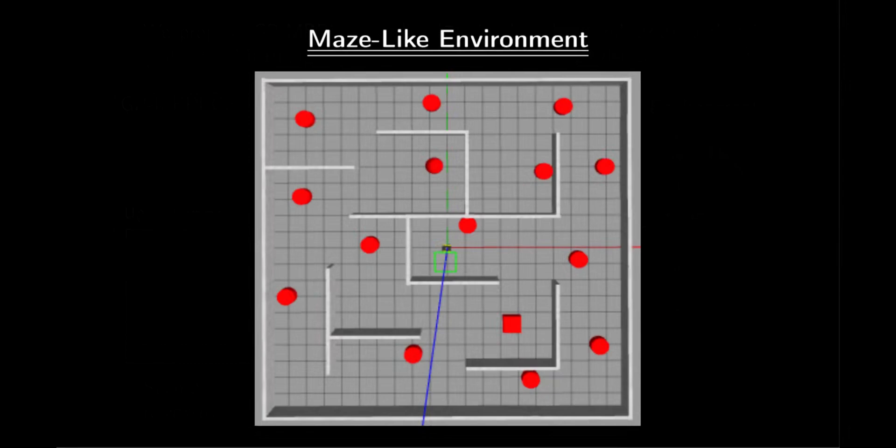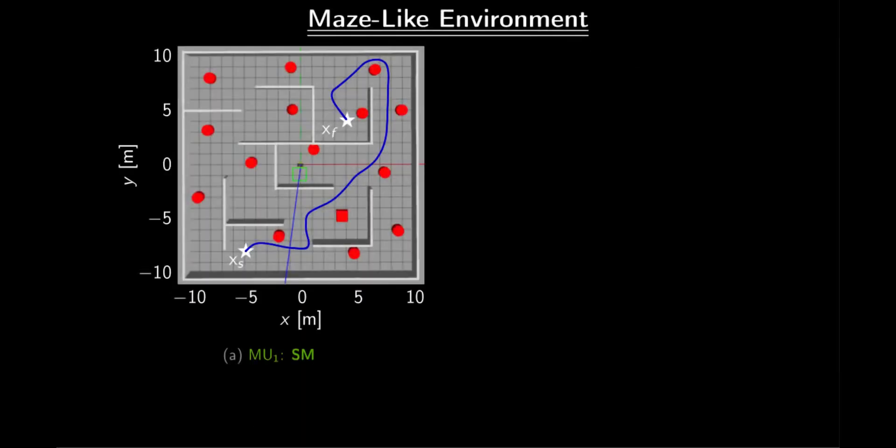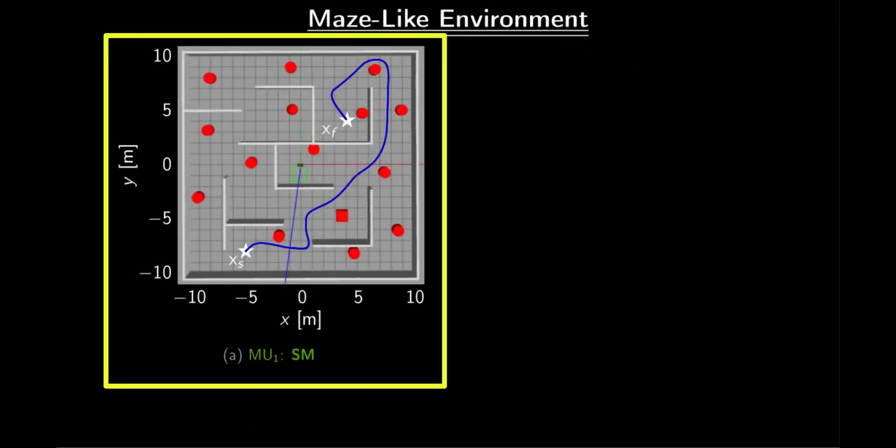For simulation, we used a challenging maze-like environment where the robot has to perform two missions, labeled as MU1 and MU2. During MU1, the robot must navigate from the environment's lower left corner to the opposite corner, where the goal is at a U-shaped obstacle, as shown in figure A.